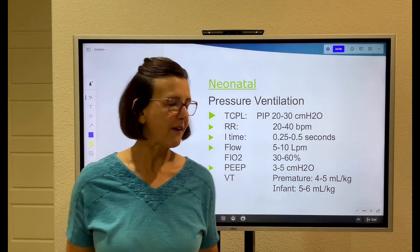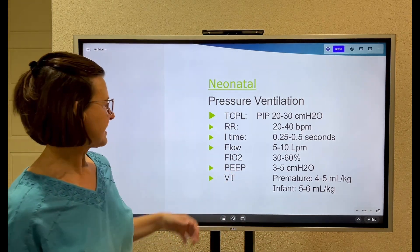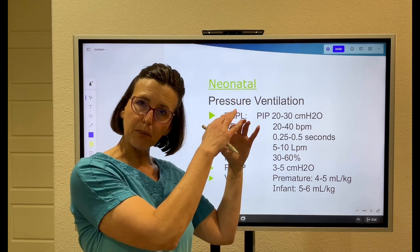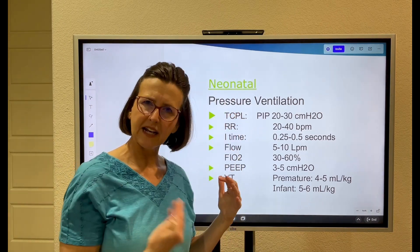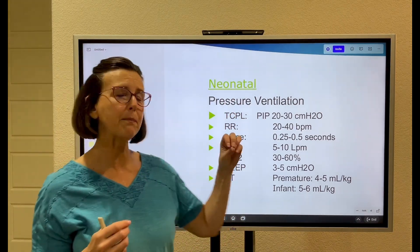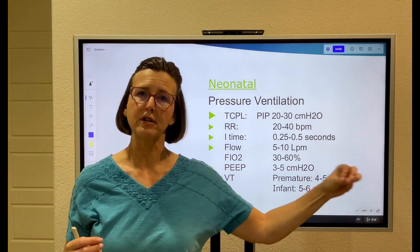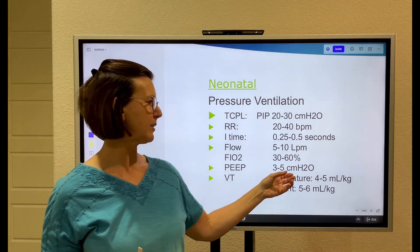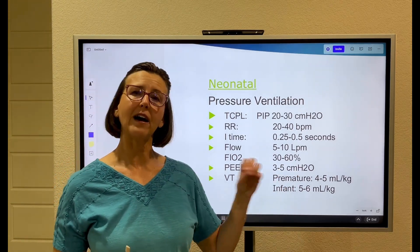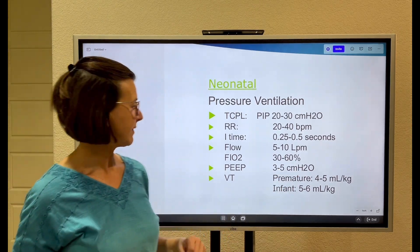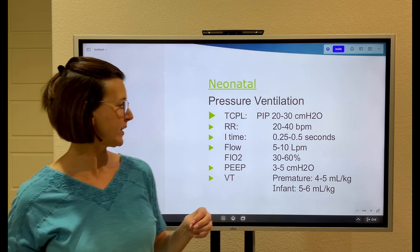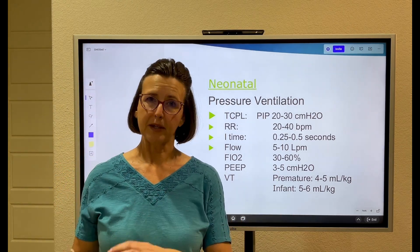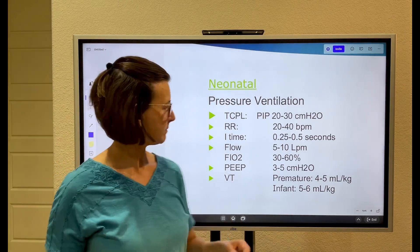PEEP is 3 to 5. Even though we're setting a pressure, we monitor the exhaled tidal volume. For a premature neonate, that exhaled tidal volume should be 4 to 5 mL per kg; for a term infant, it should be 5 to 6 mL per kg.